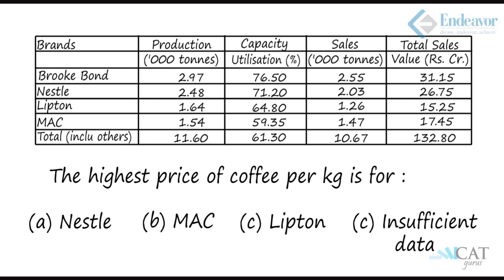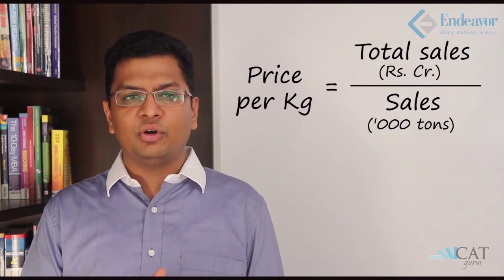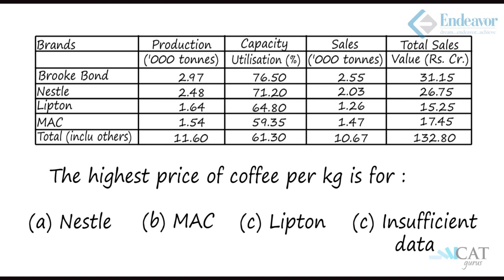Question 2: Which brand has the highest price of coffee per kg? Price per kg is total sales value divided by sales volume. We can calculate this for the four known brands — Brookbond, Nestle, Lipton, and Mac — but there is also 'others' for which we don't have the volume or sales value individually.